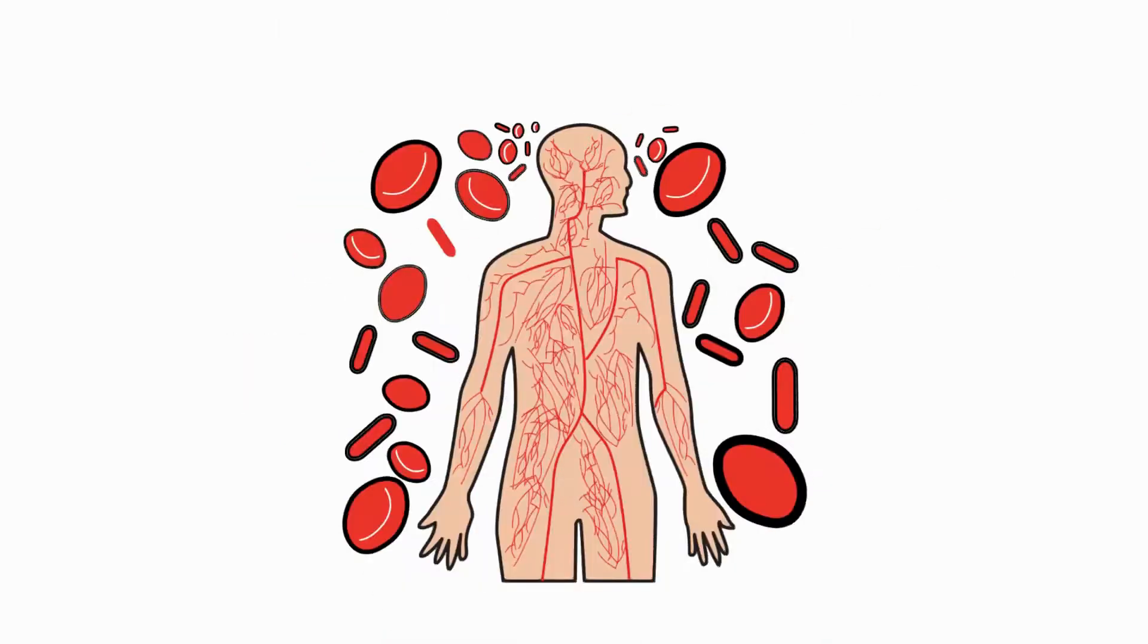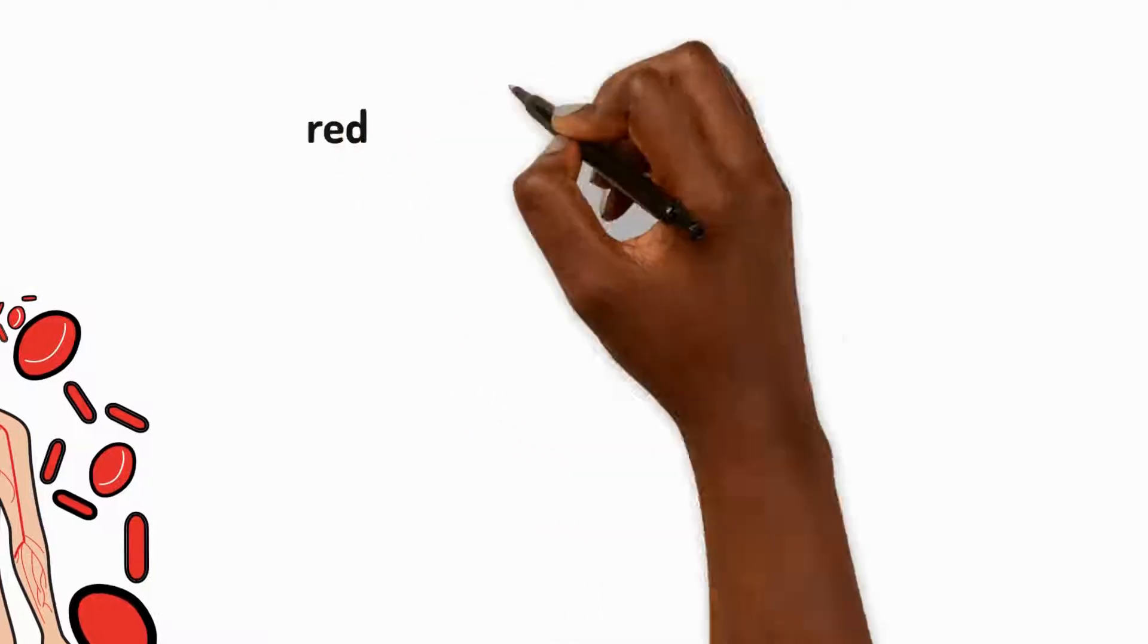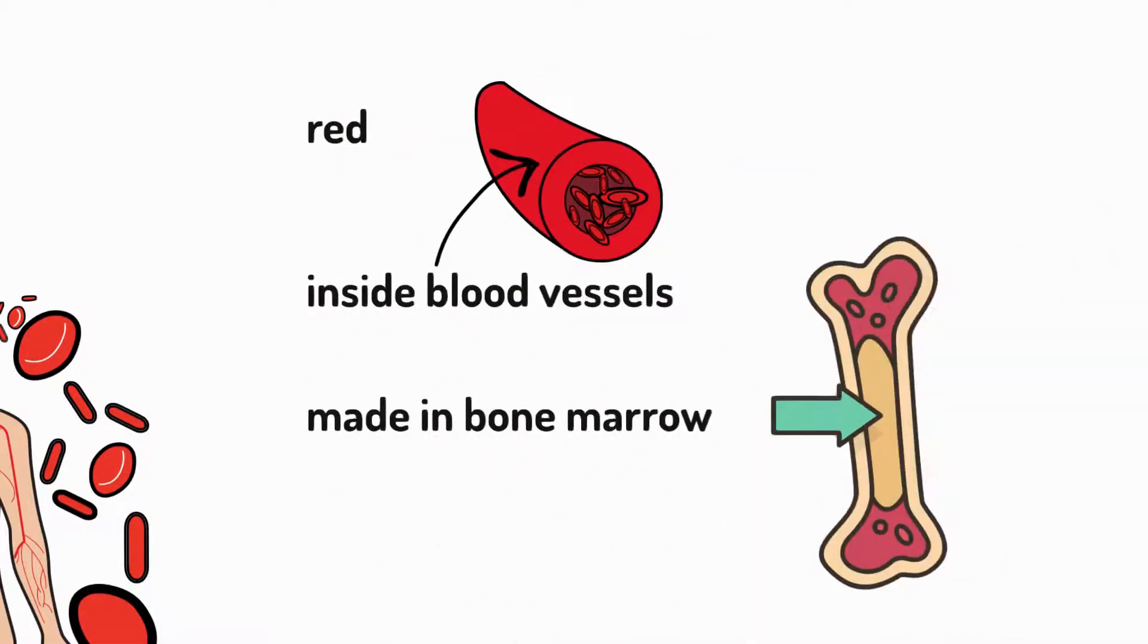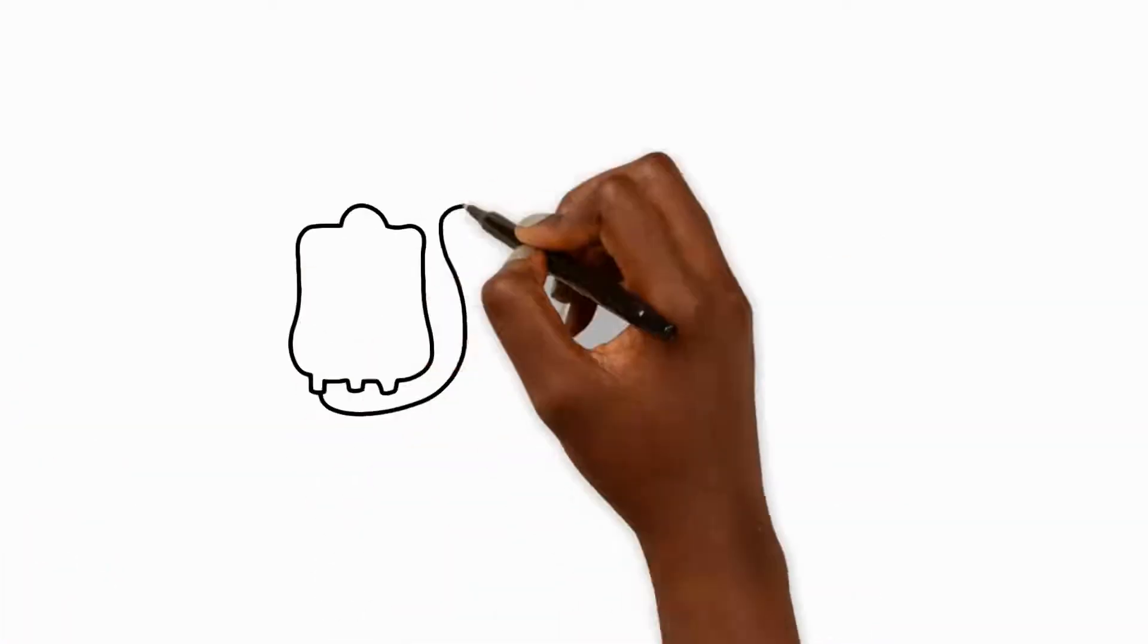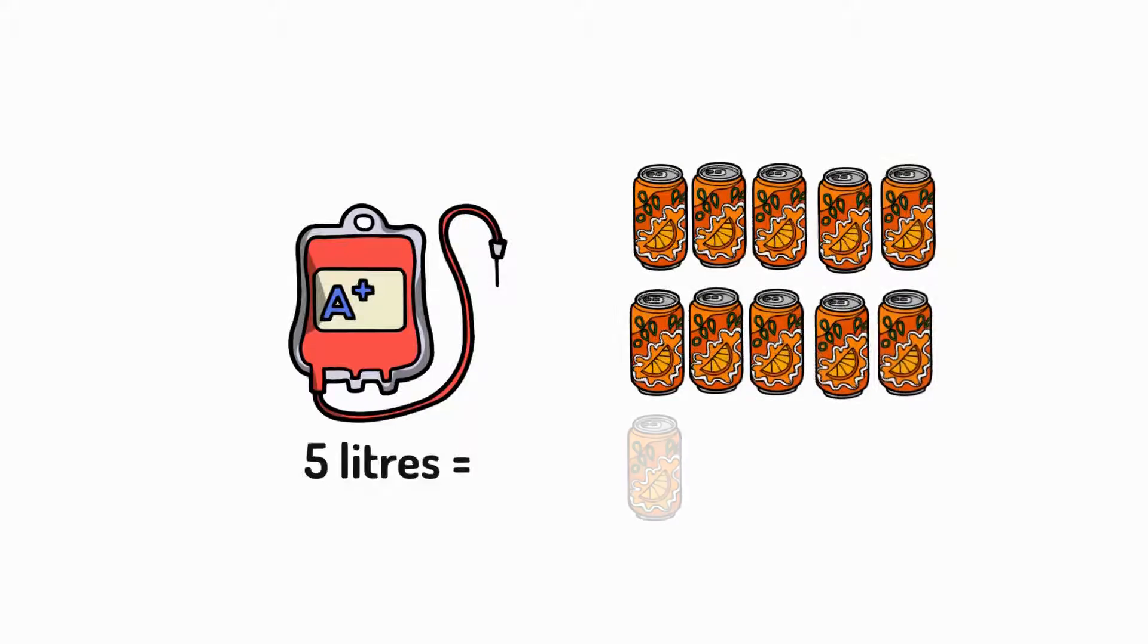Blood is an important liquid that flows throughout our body. It's red-coloured, contained in blood vessels, and is produced in the bone marrow. An adult human has about 5 litres of blood in their body. This is about the same as 15 cans of fizzy drink.